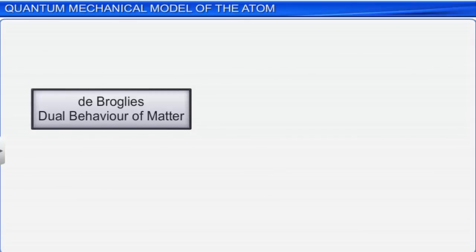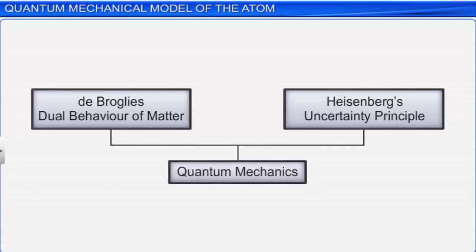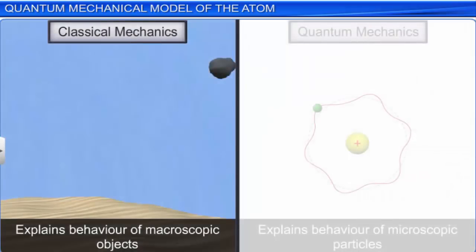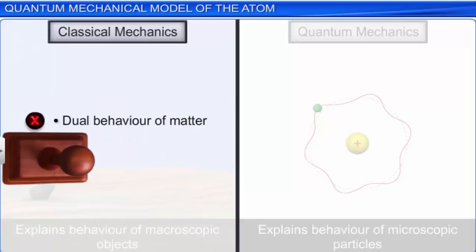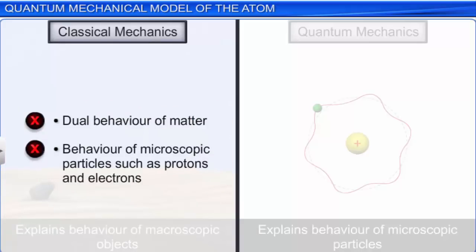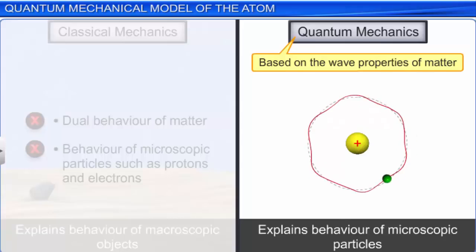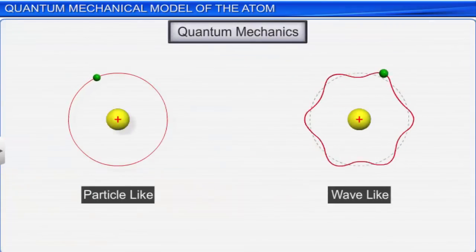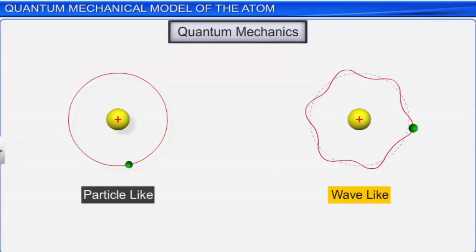De Broglie's dual behavior of matter and Heisenberg's uncertainty principle gave birth to a completely new branch of science called quantum mechanics. Classical mechanics successfully explains the behavior of macroscopic objects such as a falling stone on the basis of particle nature. It ignores the concept of the dual behavior of matter and thus fails to explain the behavior of microscopic particles such as protons and electrons. On the other hand, as quantum mechanics is based on the wave properties of matter, it describes the behavior of microscopic particles in a much better way. Hence, quantum mechanics is a theoretical science that helps to study the motions of microscopic objects that have observable wave-like and particle-like properties.